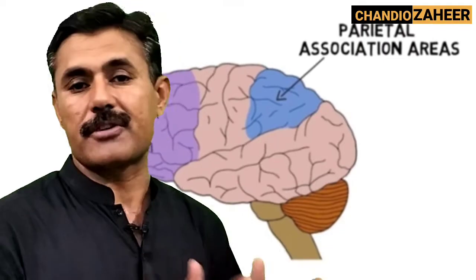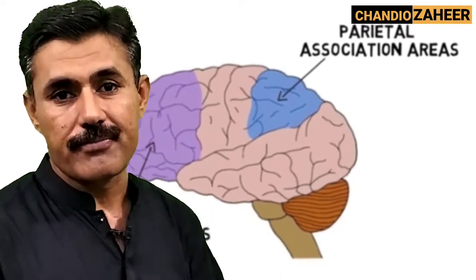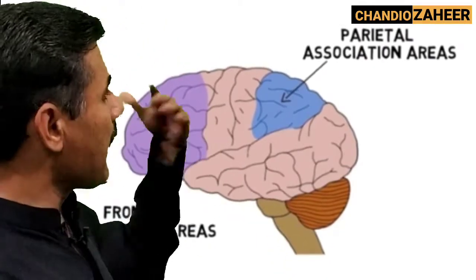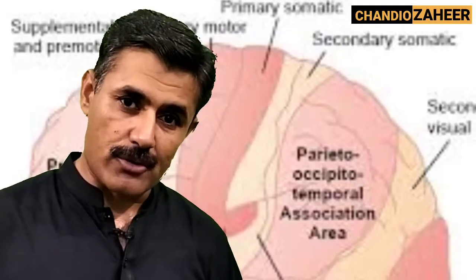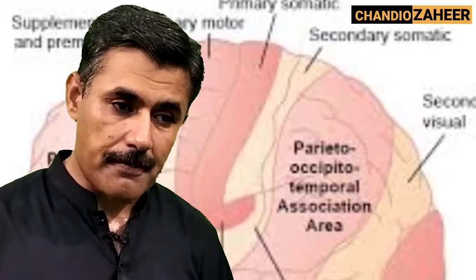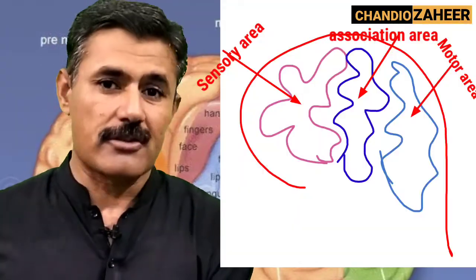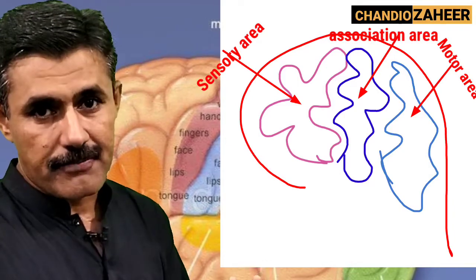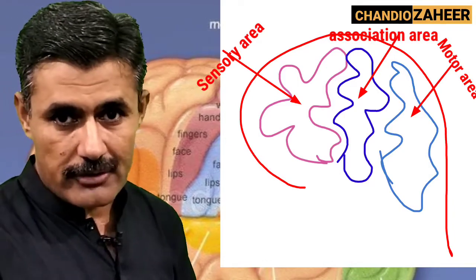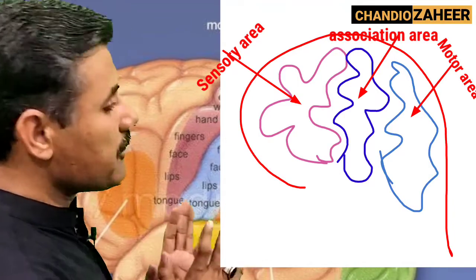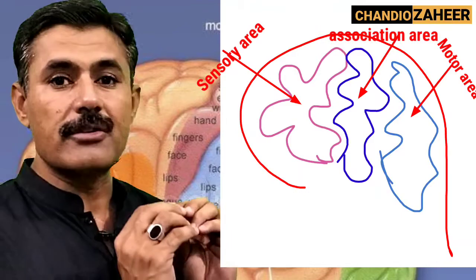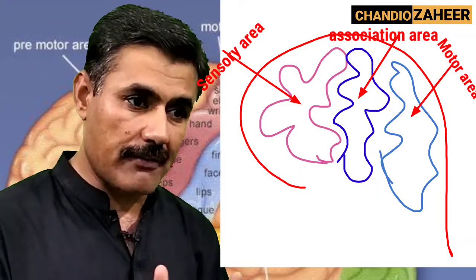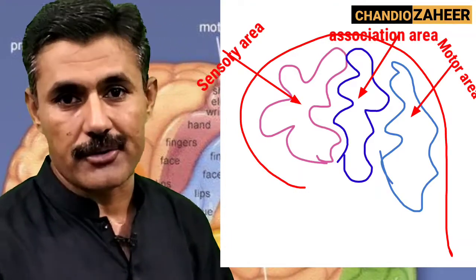The sensory area consists of sensory neurons, the association area consists of inter-neurons, and the motor area consists of motor neurons. When an impulse is received by a sensory neuron, it reaches the sensory area of the cerebral cortex, and then the impulse is sent to the association area, which consists of many inter-neurons.